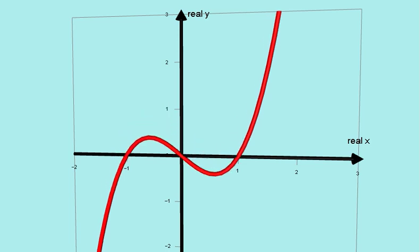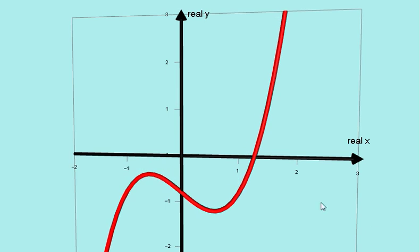If I move the graph downwards, again, it only crosses the x-axis once, here.